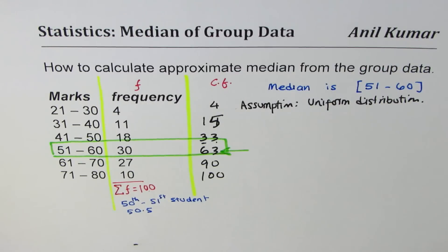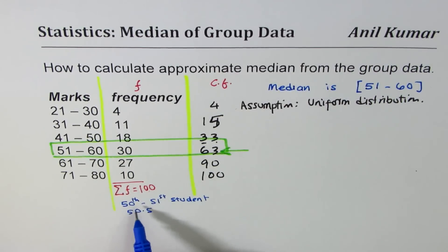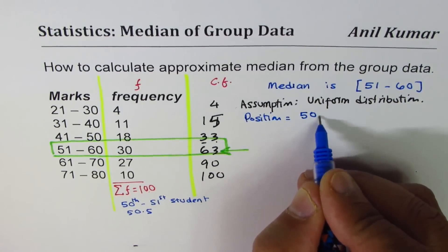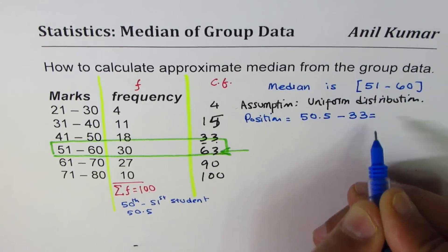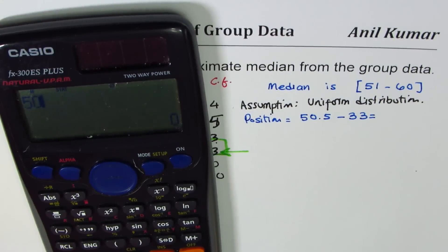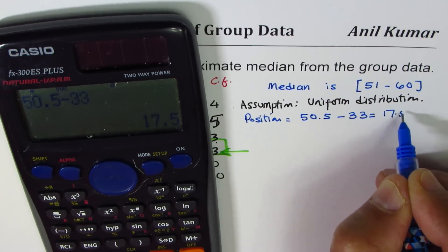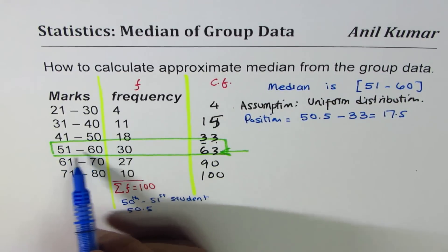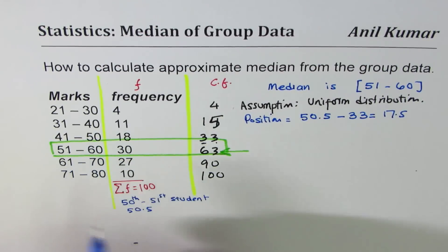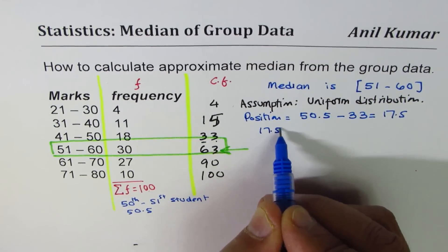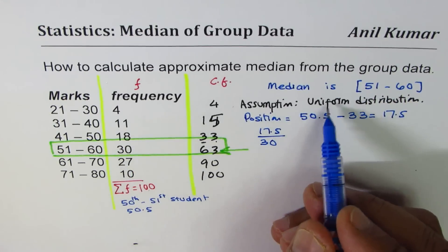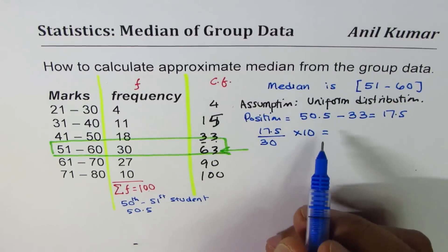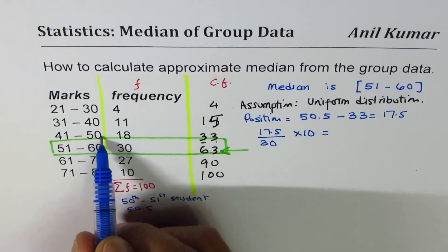Within the group 51–60, we want to find the position of the median. 33 students are already accounted for, so we need position 50.5 minus 33, which equals 17.5. Since there are 30 students in this class and the class interval is 10, the position within the interval is 17.5 divided by 30, based on our uniform distribution assumption, multiplied by 10.